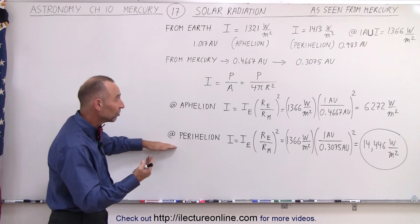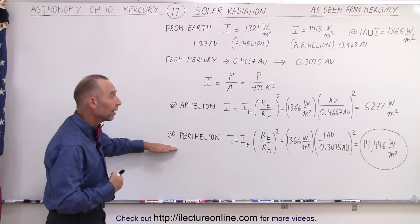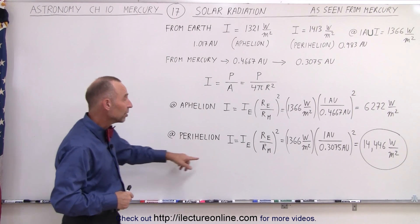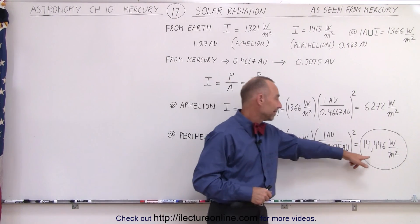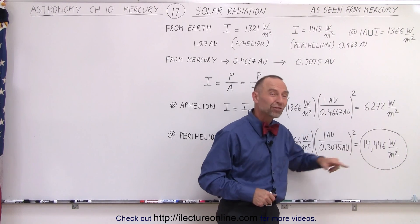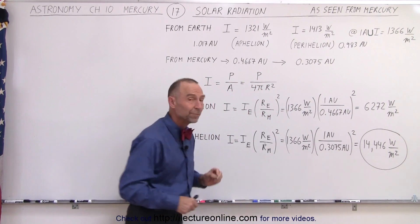And at perihelion when the distance is less than one-third of an astronomical unit, the sunlight intensity increases to over 14,000 watts per square meter.